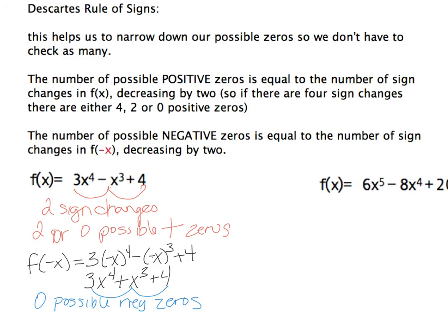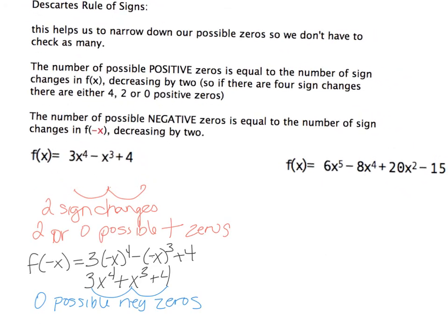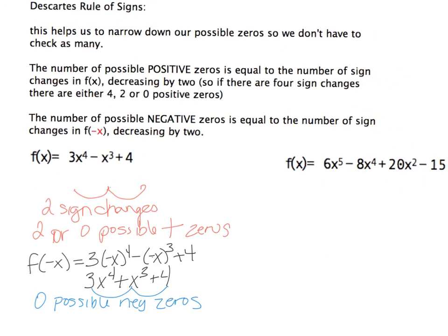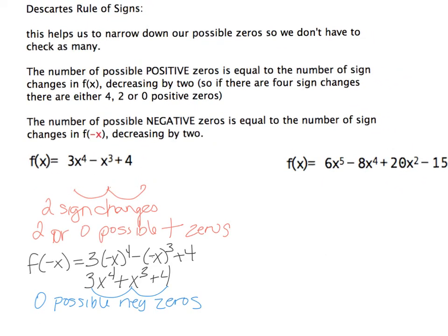Looking at the second polynomial and the positive sign changes in f(x): it goes positive to negative — that's 1, negative to positive — that's 2, positive to negative — that's 3. So there are 3 or 1 possible positive zeros.